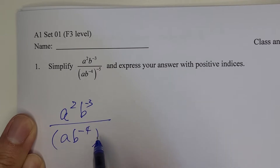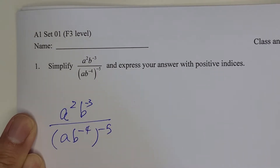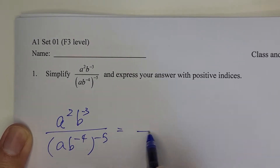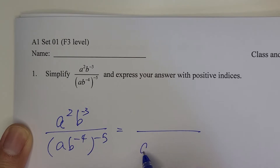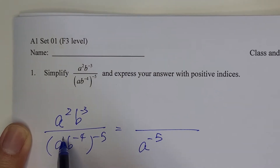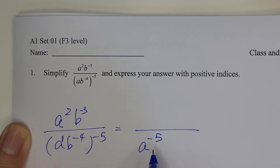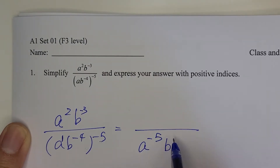First, remove the bracket by multiplying negative 5 inside, so that becomes a to the power of negative 5. There is a hidden 1 here — remember, 1 times negative 5 is negative 5 — and b to the power of positive 20.